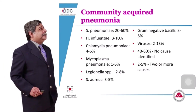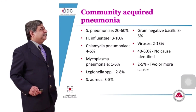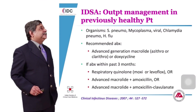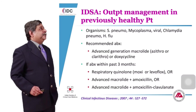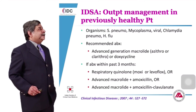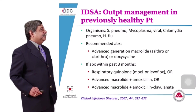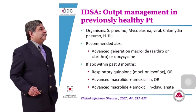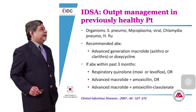For community-acquired pneumonia (CAP), the most common cause is Streptococcus pneumoniae followed by Haemophilus influenzae; in 40–60% of patients no cause is found. For previously healthy outpatients, organisms include Strep pneumoniae, Mycoplasma, viral, and Chlamydia. Recommended antibiotics are advanced-generation macrolides such as erythromycin or clarithromycin, or doxycycline. If antibiotics were received within the past 3 months, use a respiratory quinolone such as moxifloxacin or levofloxacin, or advanced macrolide plus amoxicillin, or a combination of macrolide, amoxicillin, and clavulanate.